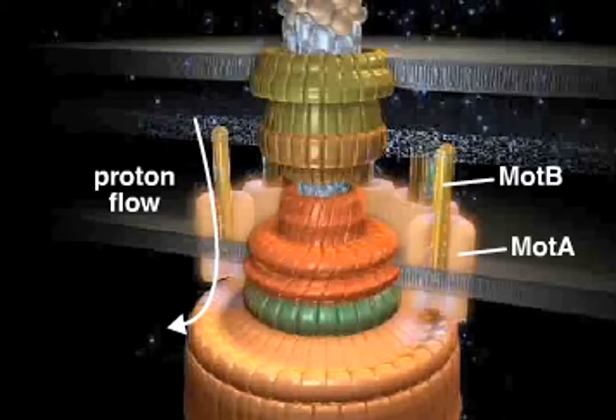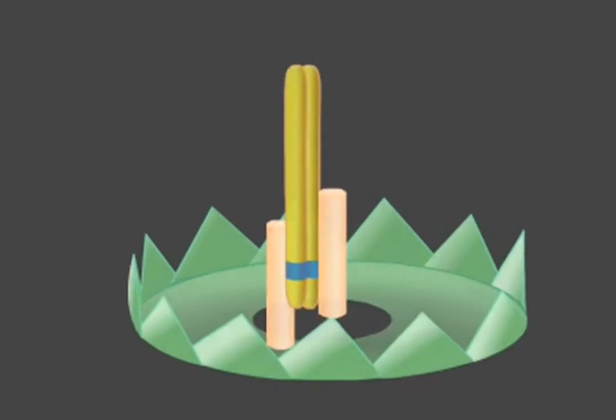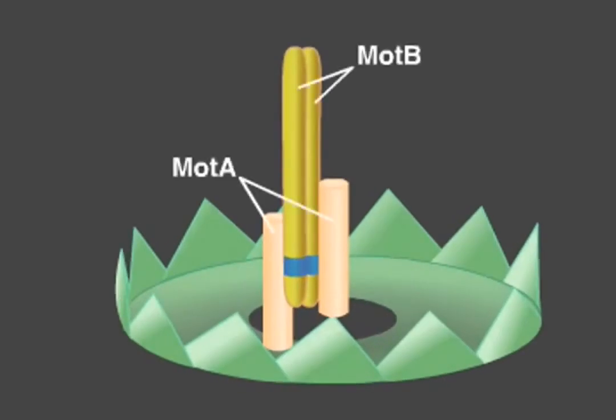Mutational studies suggest that a conserved aspartic acid in MotB functions in proton conductance. Each stator contains two MotB proteins and therefore also contains two of these important aspartic acids.